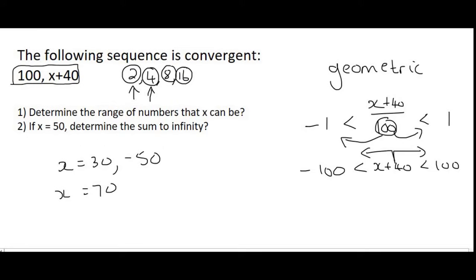Now if we just move the 40 to the right and to the left then we're going to end up with x being bigger than minus 140 and smaller than 60.